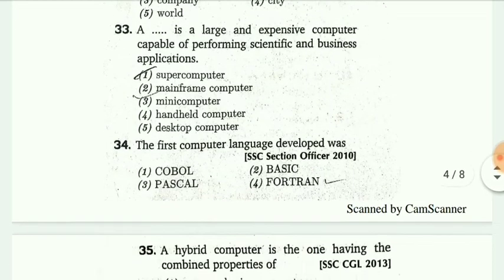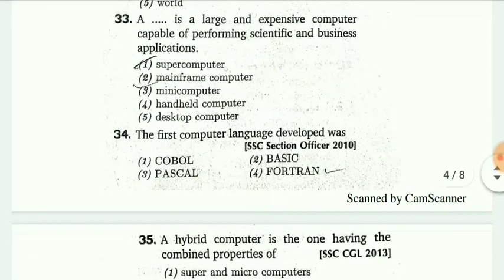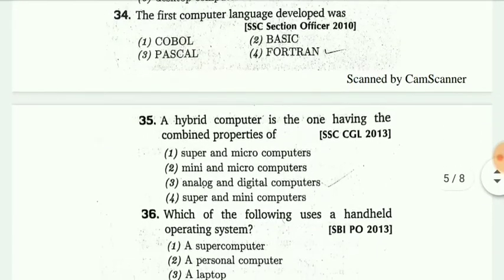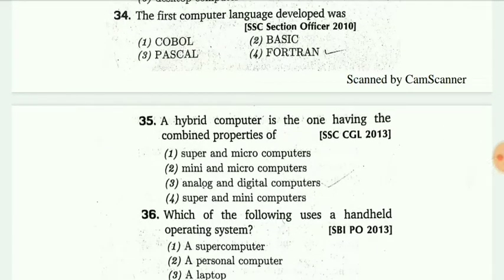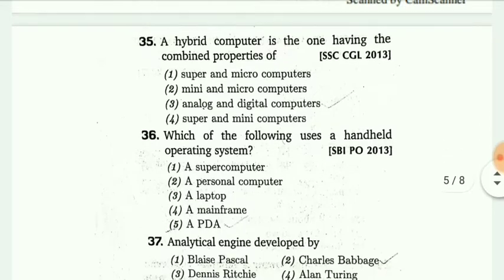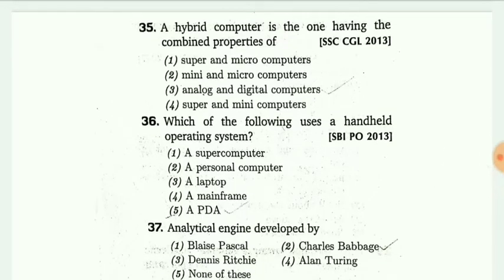Dash is a large and expensive computer capable of performing scientific and business applications. The answer is mini computer. Next, the first computer language developed. The answer is FORTRAN. A hybrid computer is one having the combined properties of analog and digital computer.